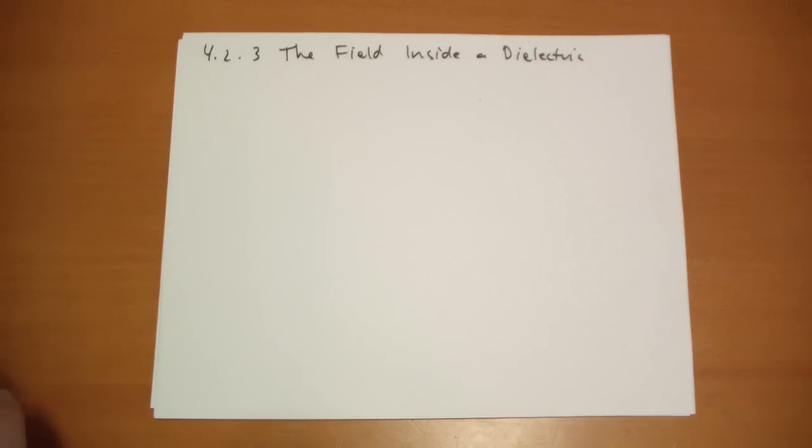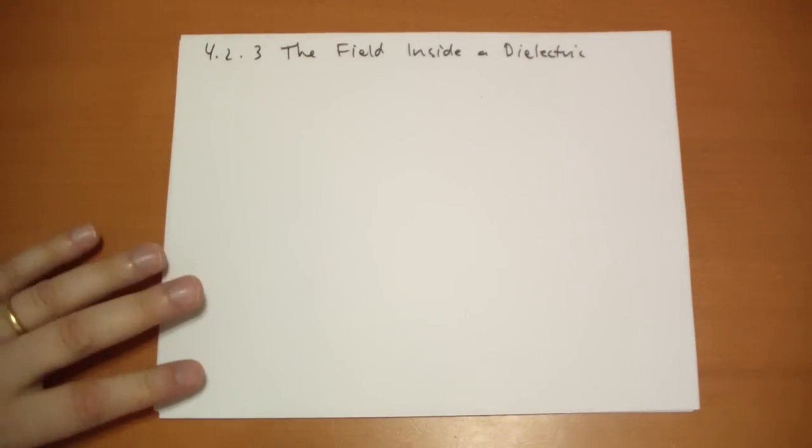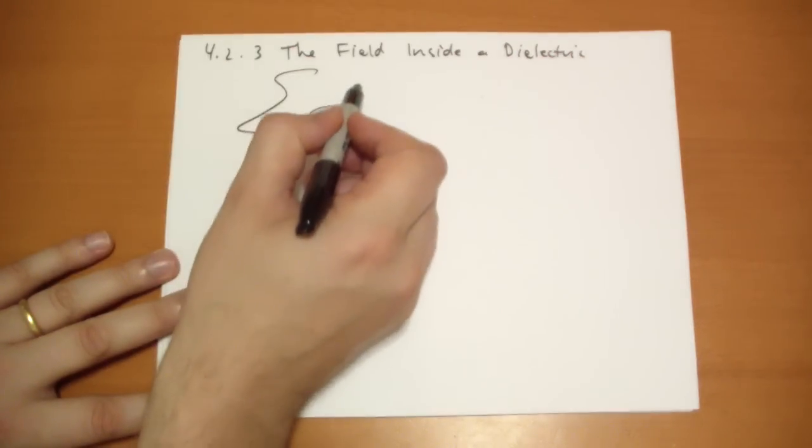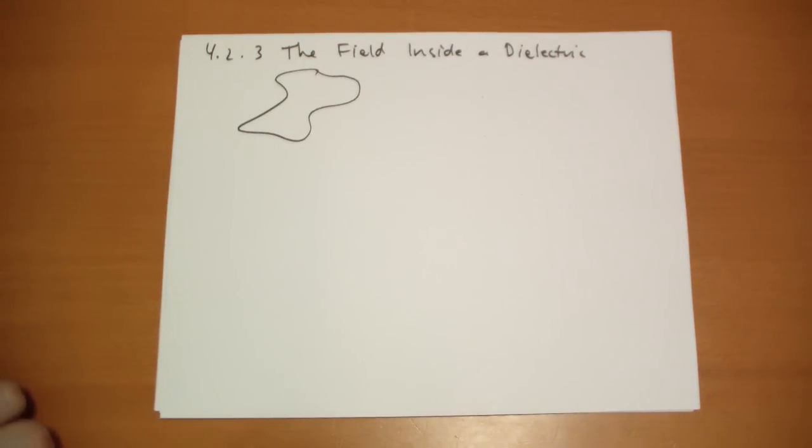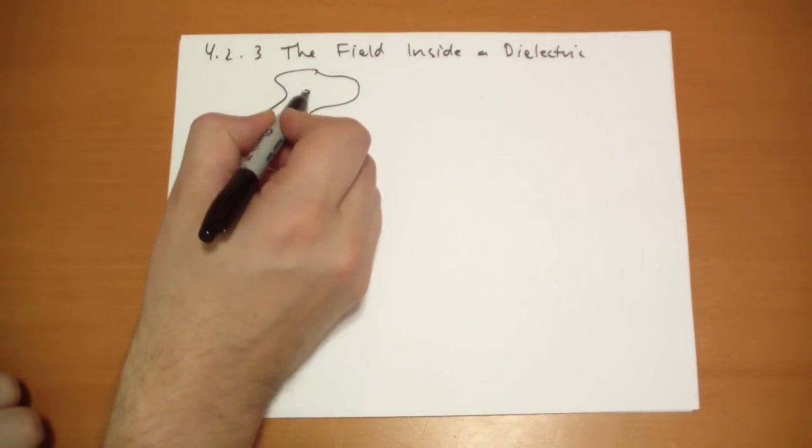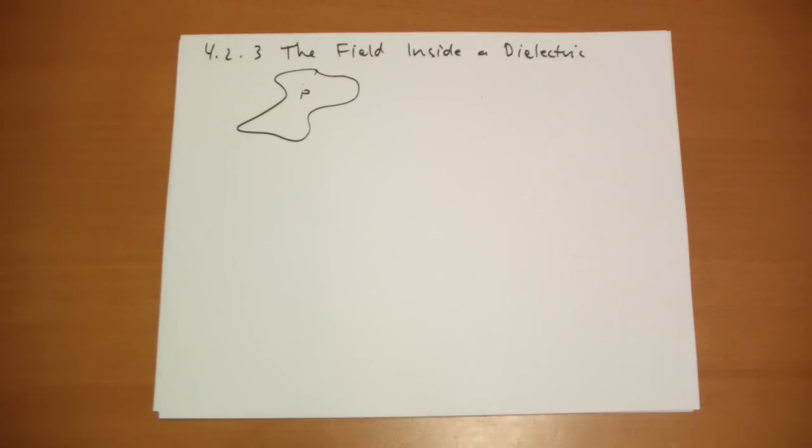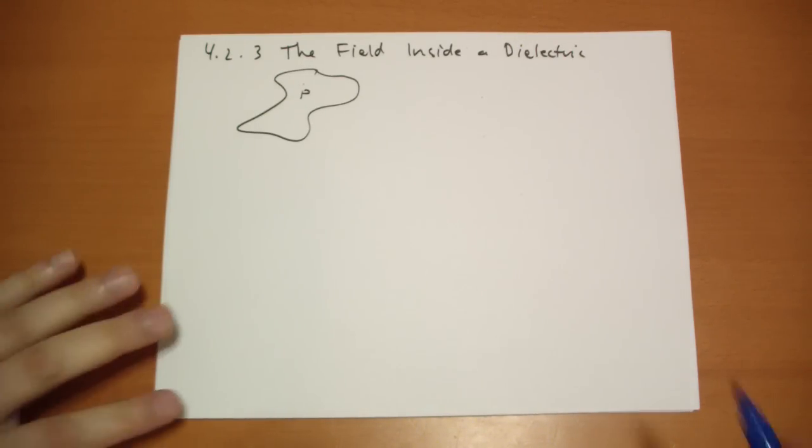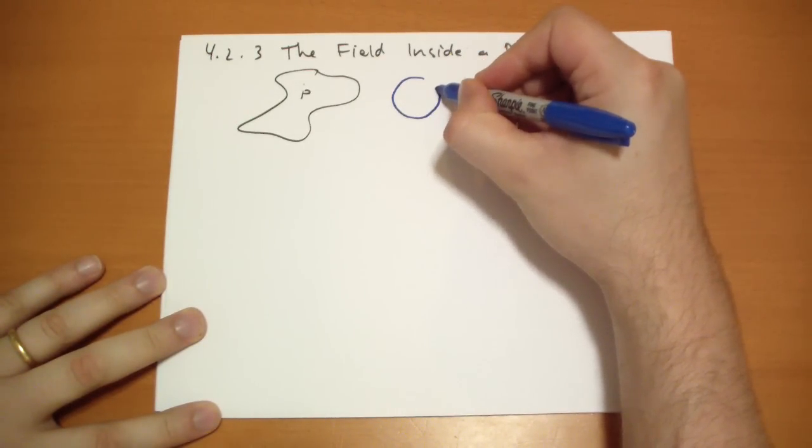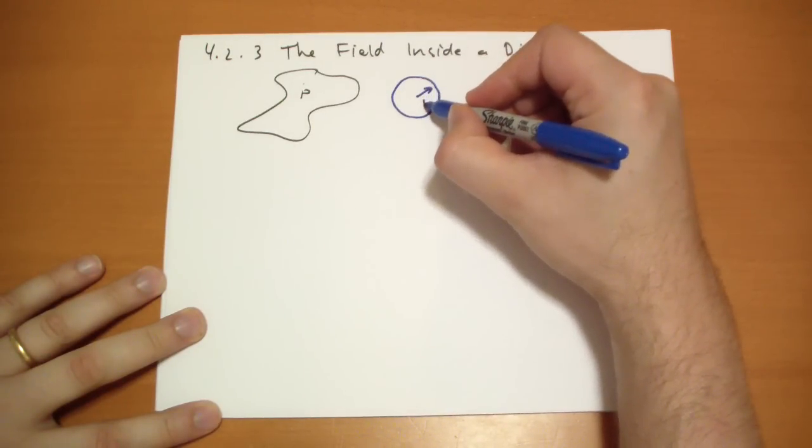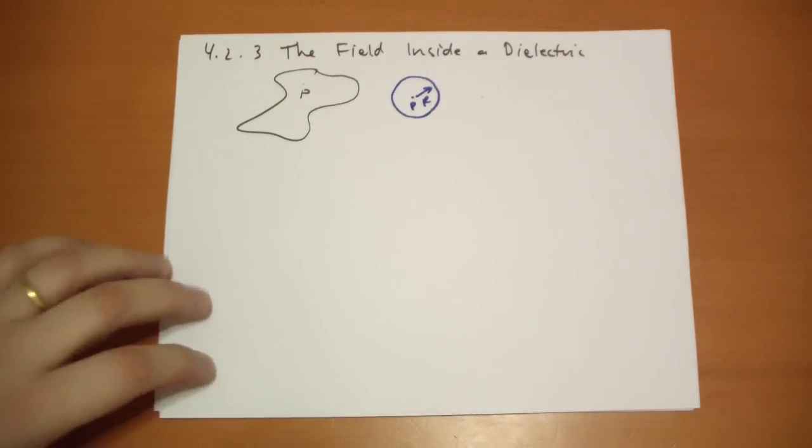So, the argument basically goes like this. Let's take any material which has some polarization going on. And we're going to look at point P, which is right there. And if we blow up point P, we're not going to look at an actual point here. We're going to actually look at a small sphere. Radius R, centered at point P.